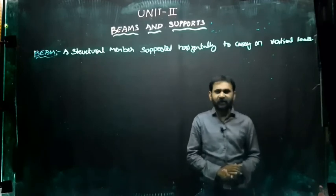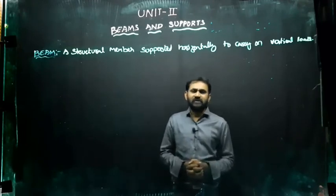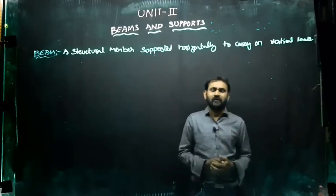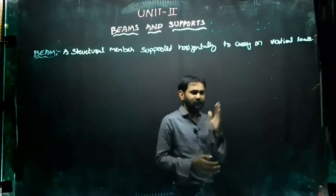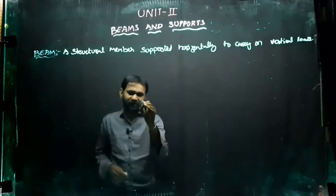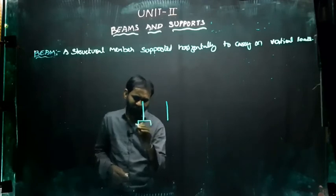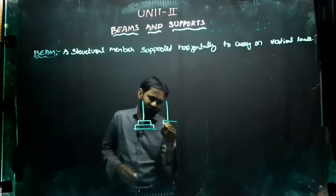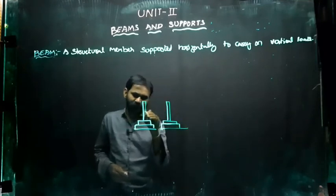What are beams? Generally in your houses you have beams and columns. The vertical members are called columns — generally we call them pillars or columns. On the columns we have some horizontal members. Those horizontal members are called beams. So you construct a house, you have foundations and vertical columns, and these are called columns.